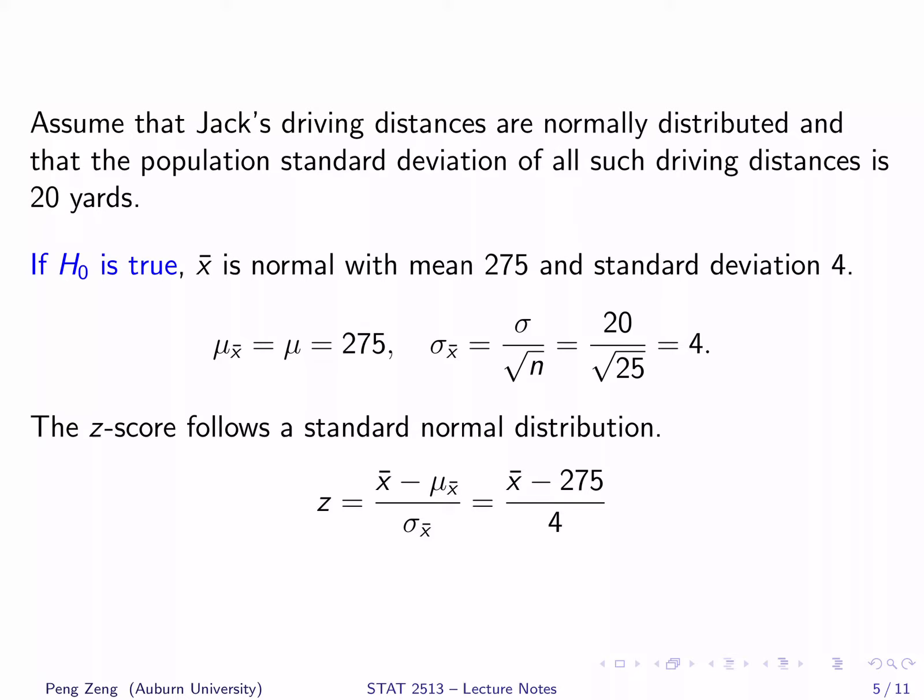If H0 is true, x-bar is normal with mean 275 and standard deviation 4. This follows from the property of the sampling distribution of sample means. Notice that the mean of the sample mean equals the population mean. When H0 is true, the population mean is assumed to be 275. The standard deviation of the sample mean is the population standard deviation divided by square root n — here, 20 divided by square root of 25 equals 4. A small value of x-bar supports the alternative and a large value of x-bar supports H0.